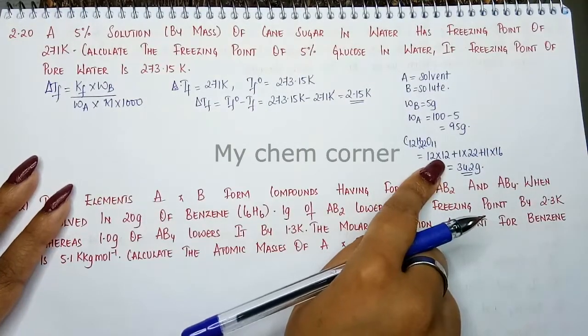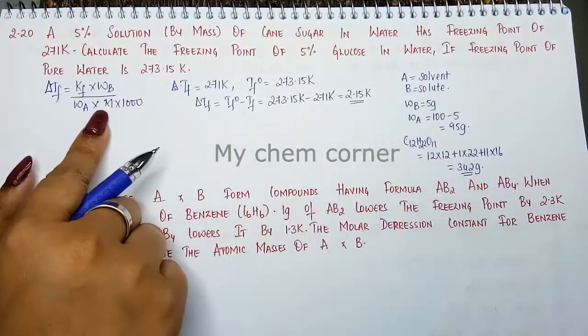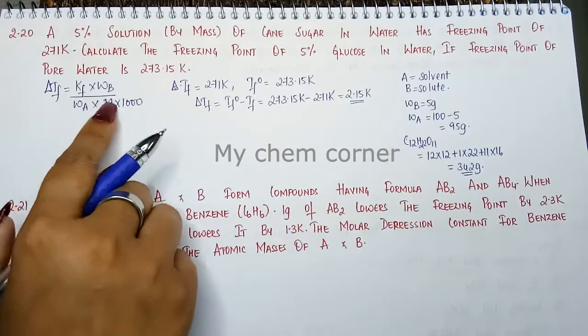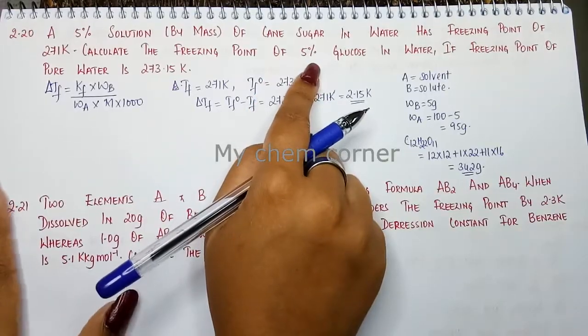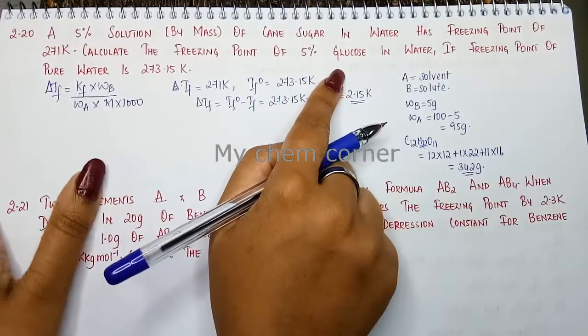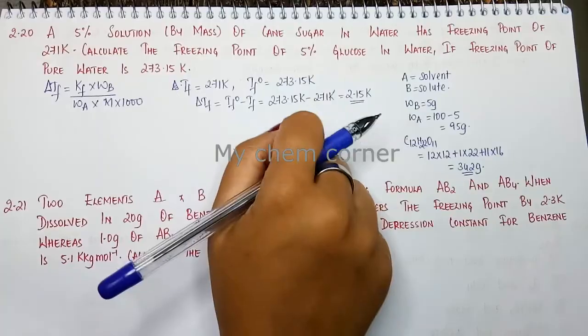Now let's substitute all these values in the question. But what is asked to us to calculate is the freezing point of 5% of glucose. That's what is asked.